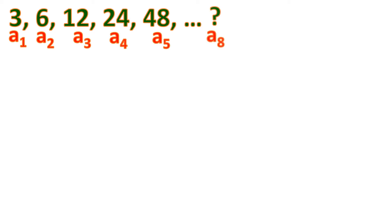So this is a geometric sequence. Let's label these terms: a sub 1, a sub 2, 3, 4, and 5 — so there are five terms given, but there are actually infinitely many terms because it continues. Let's say we're going to find the eighth term. Finding that term is not hard as long as you know the common ratio, which for this problem is 2.